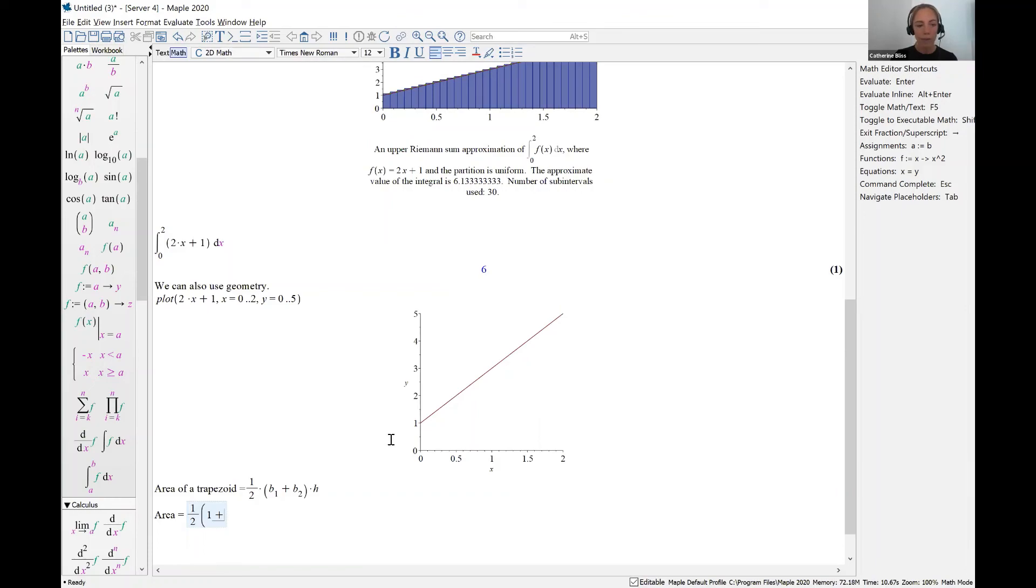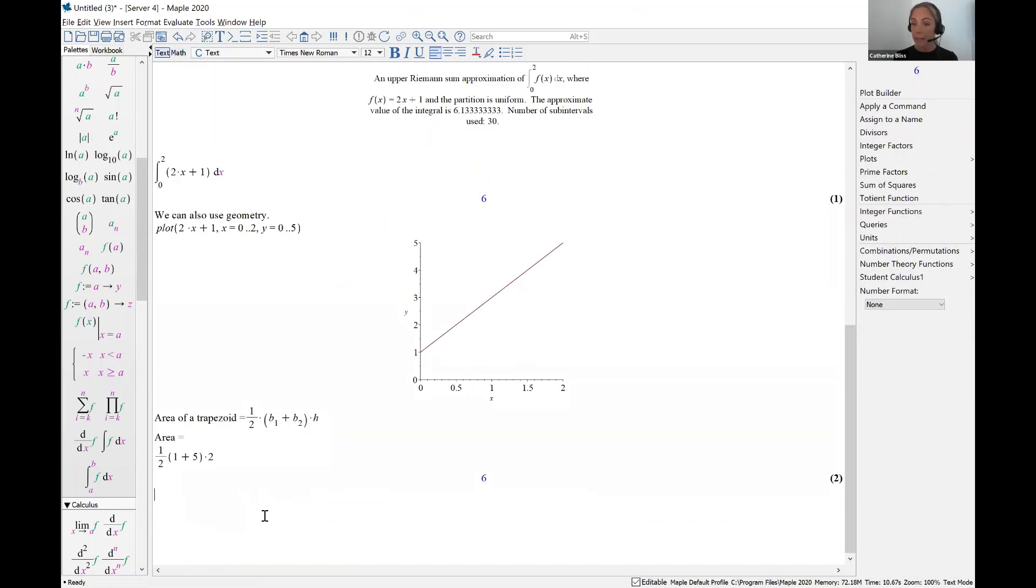times the height. And remember, the height is the component that is perpendicular to your two bases. So in this case, the height, if we turn our head sideways here, the height spans from 0 to 2. That's the component that's perpendicular to each of the bases of our trapezoid. And so if we work this out, that is 6.